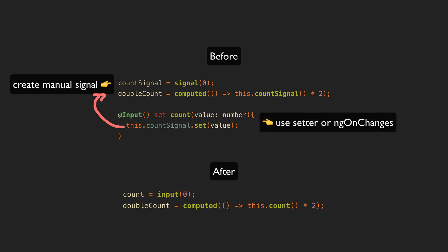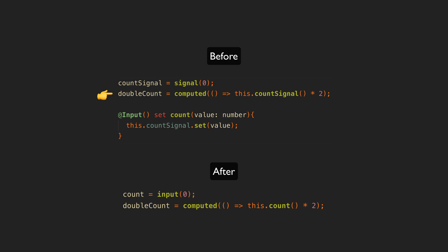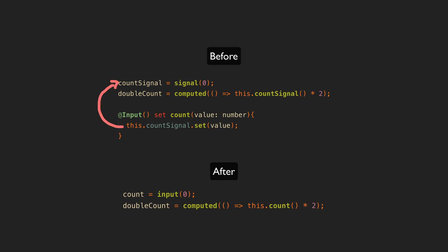In this particular example we use an input setter that will set a separate count signal every time the input changes, and then we can derive our double count signal as normal from this extra signal we've created. Not only is this extra work, but it also makes the code imperative. Our double count is derived from this count signal, but what this count signal is is not contained entirely within its declaration — it is being imperatively set from somewhere else, in this case by this input setter.